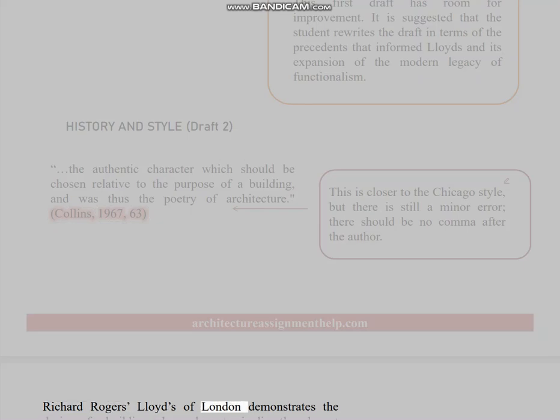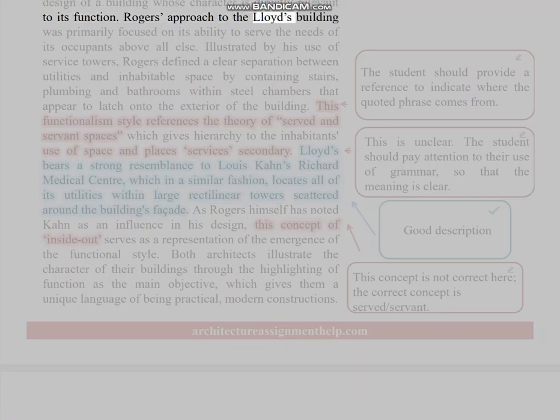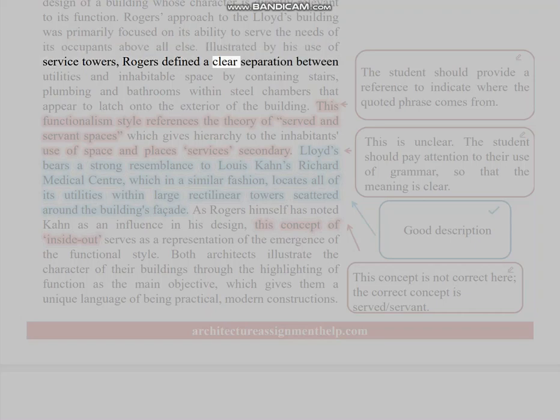Richard Rogers' Lloyd's of London demonstrates the design of a building whose character is directly relevant to its function. Rogers' approach to the Lloyd's building was primarily focused on its ability to serve the needs of its occupants above all else. Illustrated by his use of service towers, Rogers defined a clear separation between utilities and inhabitable space by containing stairs, plumbing, and bathrooms within steel chambers that appear to latch onto the exterior of the building. This functionalism style references the theory of served and servant spaces, which gives hierarchy to the inhabitants' use of space and places services secondary. Lloyd's—the student should provide a reference to indicate where the quoted phrase comes from.